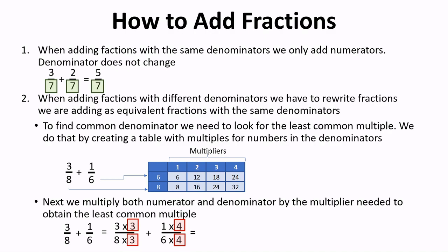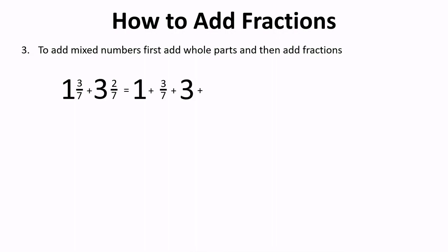Plus, we have 9 twenty-fourths plus 4 twenty-fourths and that is equal to 13 twenty-fourths. To add mixed numbers, first we add whole parts and then we add fractions. For example, to add 1 and 3 sevenths and 3 and 2 sevenths, first we add 1 and 3, which is 4.